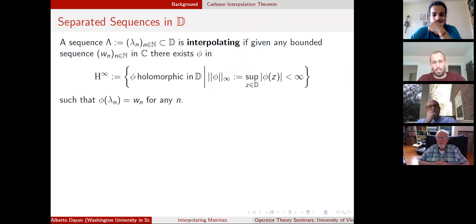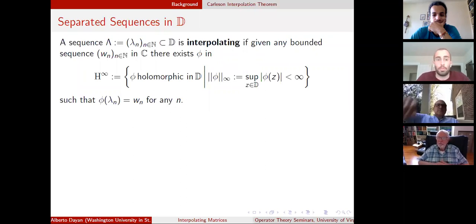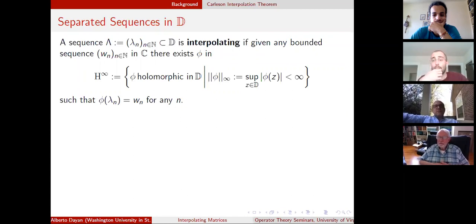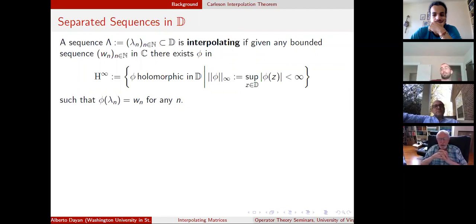In the first half, we will extend Carleson's interpolation theorem to such objects, and in the second half, we will study separately the non-commutative setting and the commutative setting to extend some partial results on interpolating sequences on the polydisc to d-tuples of square matrices. So let me start with the background, what was known before we started. A sequence lambda in the unit disk is said to be interpolating if given any sequence of bounded targets, w_n in C, there exists one bounded analytic function in H-infinity that sends each lambda_n to each w_n.